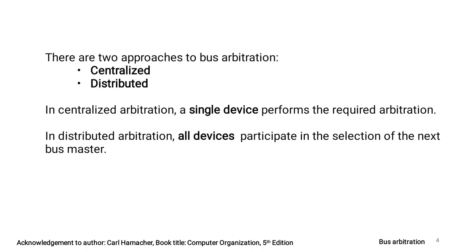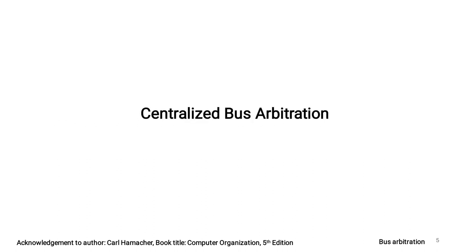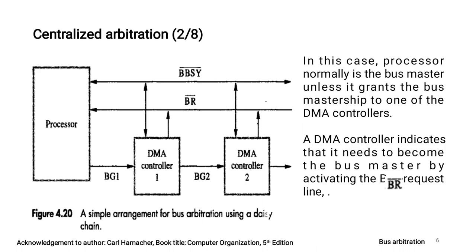There are two approaches for bus arbitration — two approaches for choosing the next bus master. The first is centralized bus arbitration, and the second is distributed bus arbitration. In centralized bus arbitration, a single device participates in choosing the next bus master. In distributed bus arbitration, all devices participate in the selection of the next bus master. This figure shows the arrangement needed for centralized bus arbitration — how a single device participates in choosing the next bus master and how bus mastership is transferred.